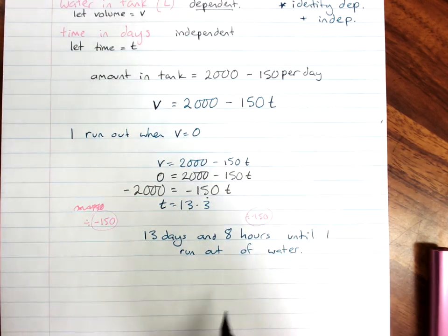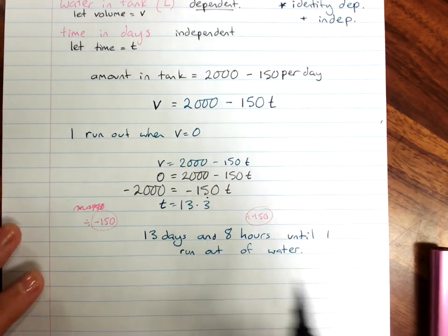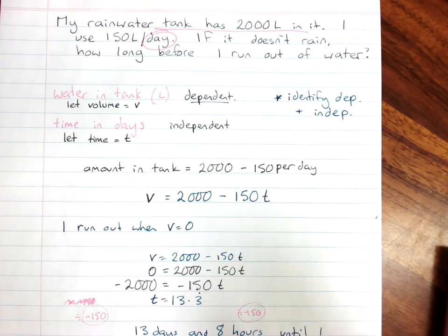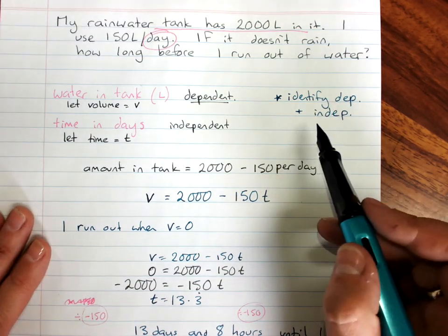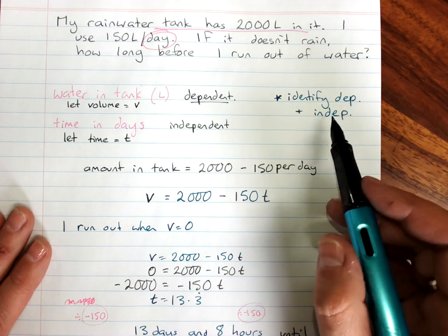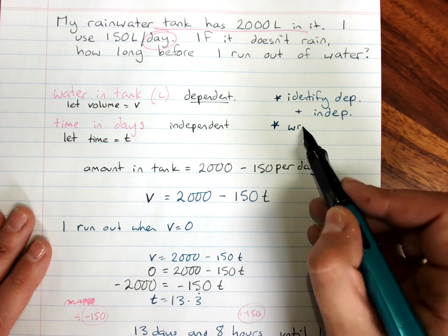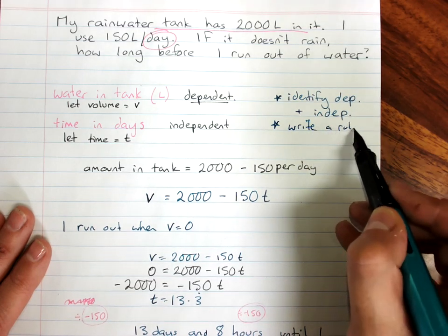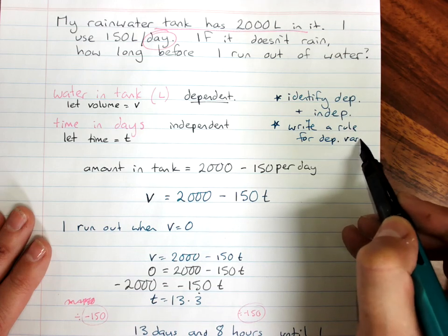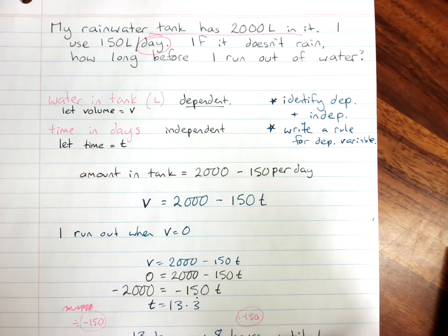So if it doesn't rain within about 12 days I'd probably better get the water truck in. So your steps are identify dependent and independent variables, use those to write a rule for the dependent variable, and then solve the problems by substituting.